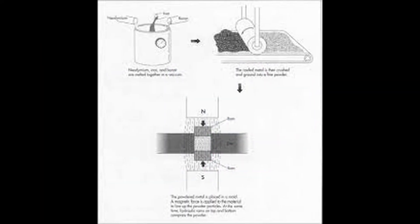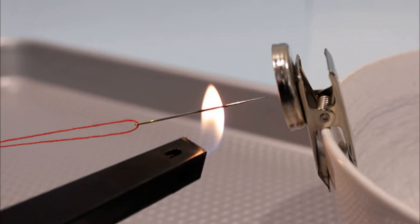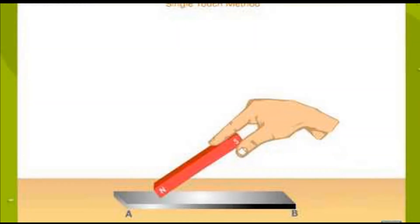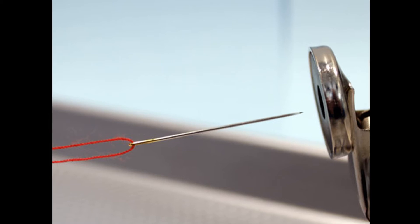Methods of Making Magnets. The Chinese are also believed to have discovered that an iron needle can be magnetized by heating it up and letting it cool while aligned in a north-south direction. Single Touch Method: Take a magnetic material like a steel needle and stroke it with the south pole of a bar magnet from the eye to the pointed end.